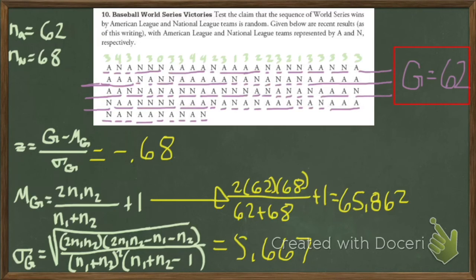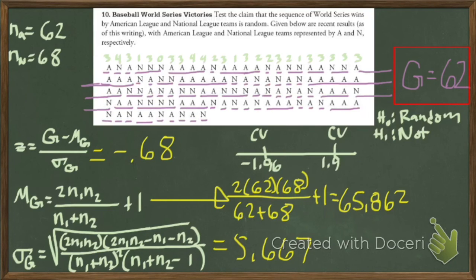Since Z is a Z chart, we set up Z hypothesis. We assume that it's random until we're able to show that it's not. Our critical values are Z scores 1.96 and negative 1.96. Fail to reject in between. This is a two-tailed test. Reject to the left, reject to the right. And where might our test statistic lie? Right there. Fail to reject.